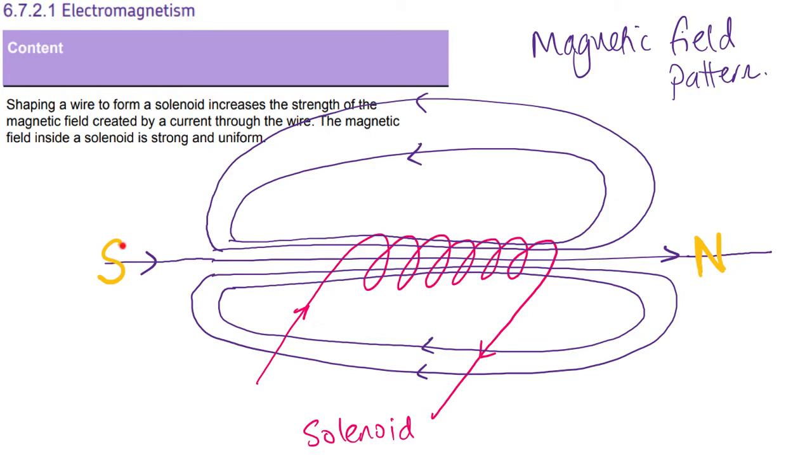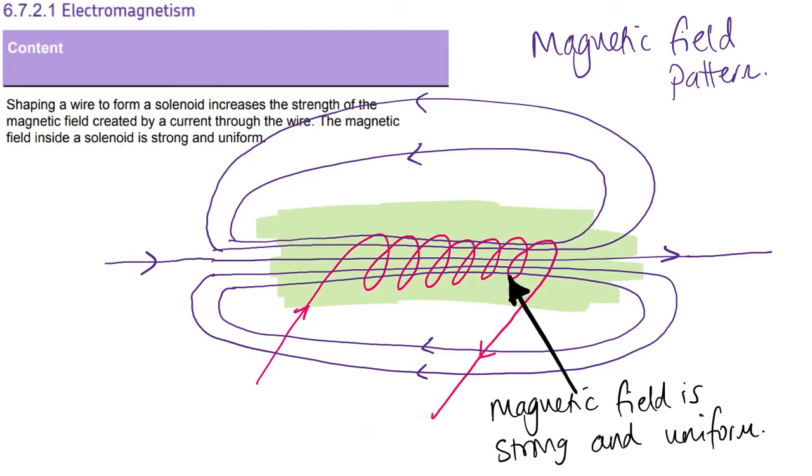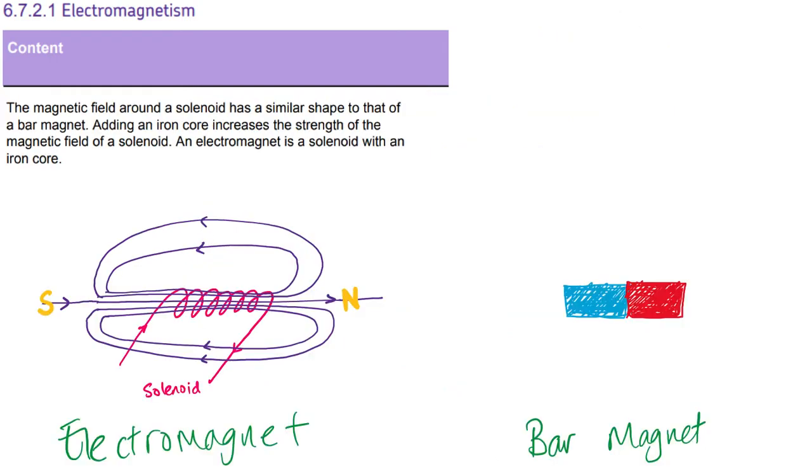You also get a north and a south pole. So the north pole has the arrow coming out and the south pole has the arrow going in. Now, hopefully you've noticed the bit in the middle where the magnetic field lines are closest. That's where they're strongest. So we would say that the magnetic field in this green area is strong, but we'd also say it's uniform. And what we mean by that is we've got a series of straight lines that are all the same distance apart from each other.